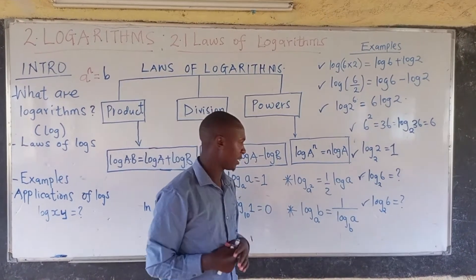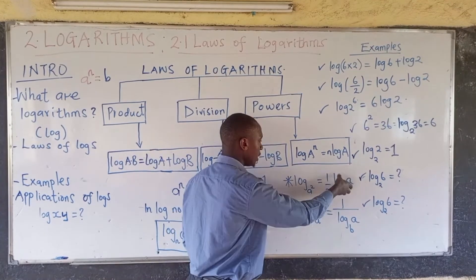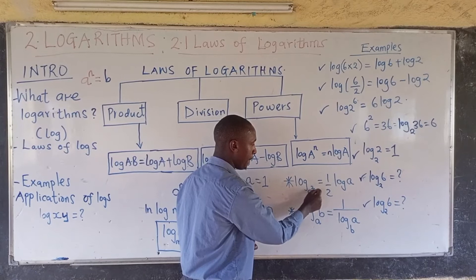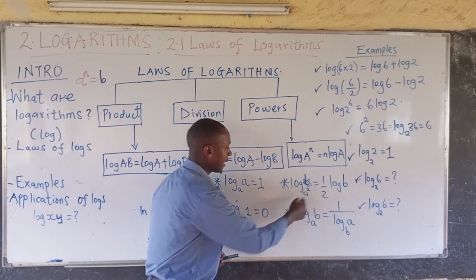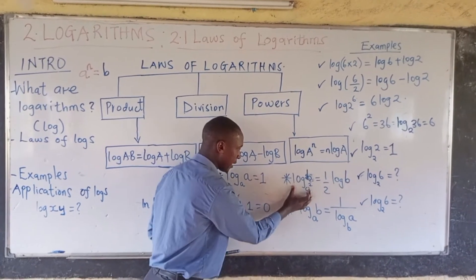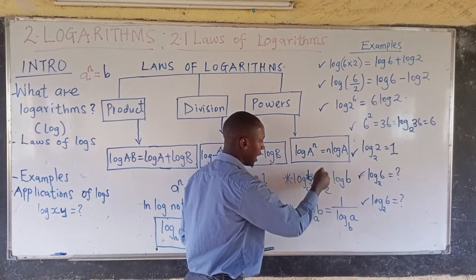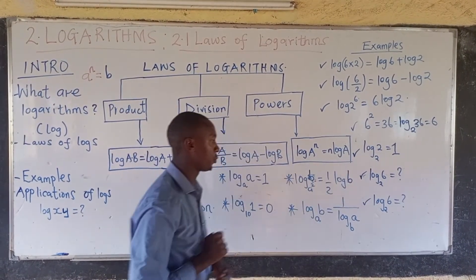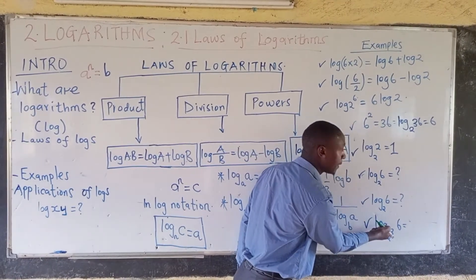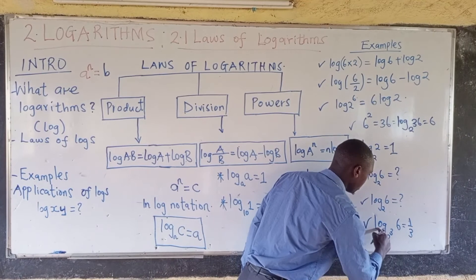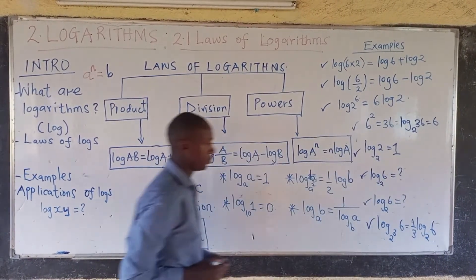We have another law: if you have log of B to base A squared, the result is equal to its inverse — we take the inverse of the power and multiply it by the logarithm. So log of B to base A squared gives one-half times log B, because the inverse of 2 is one-half. Similarly, the result involves taking the inverse of 3, which is one-third, multiplied by log to base 2 of 6.